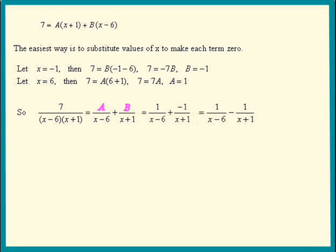So the two partial fractions are 1 over x minus 6 and negative 1 over x plus 1. So let's plug it in the equation, simplify it, and then integrate our result.